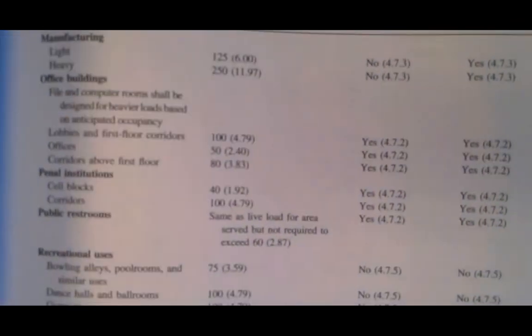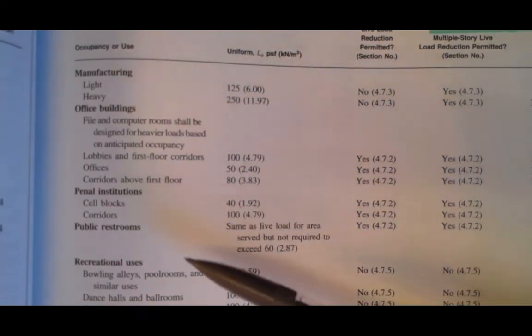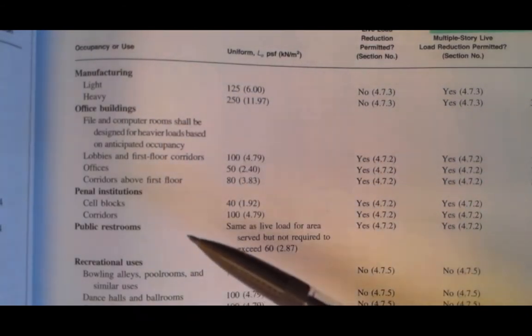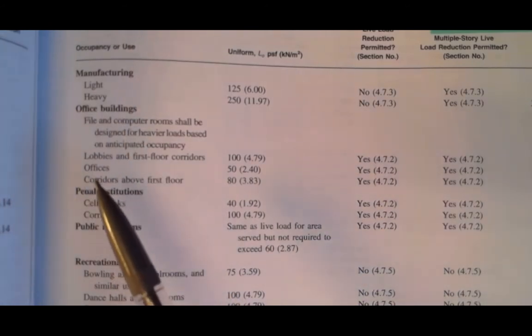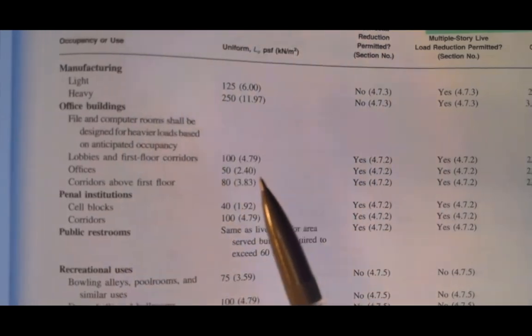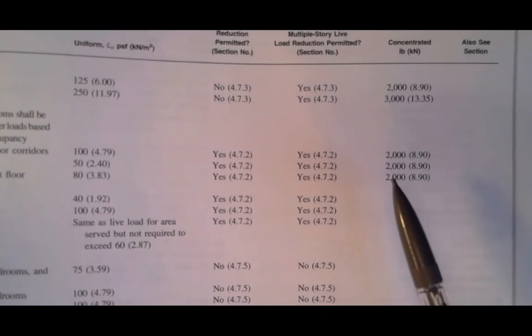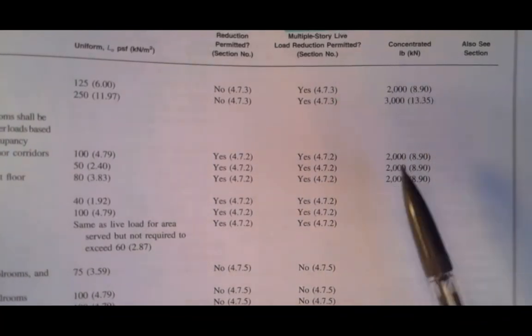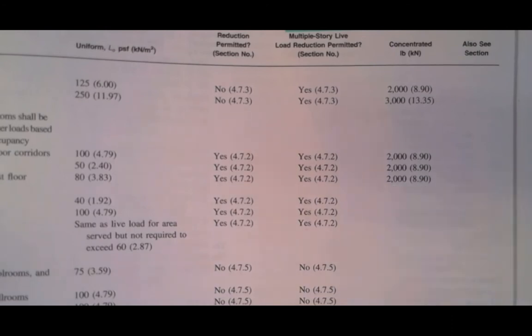This is on page 15. I'm just going to show you what it looks like. You've got this long table with different types of uses for buildings. If you're talking about an office building, then we're looking at like 50 PSF for the uniform load, and you go all the way over to the side here and you can see the concentrated load that's in kilonewtons. I'm sorry, this is in pounds, so 2,000 pounds, 8.9 kilonewtons. That's what you'd use for a concentrated load.